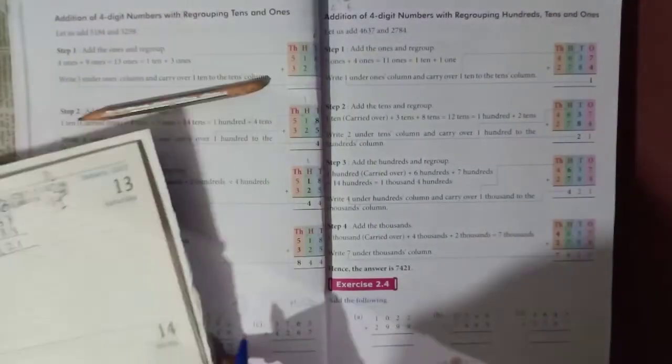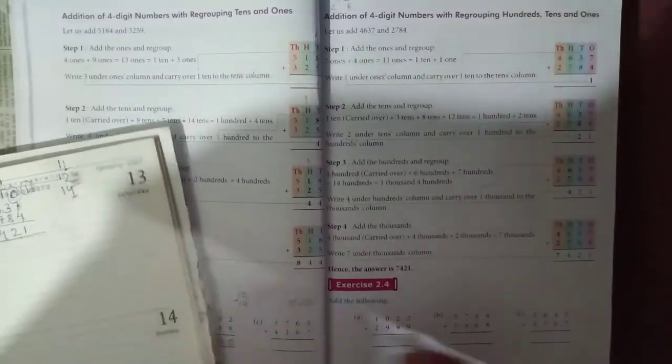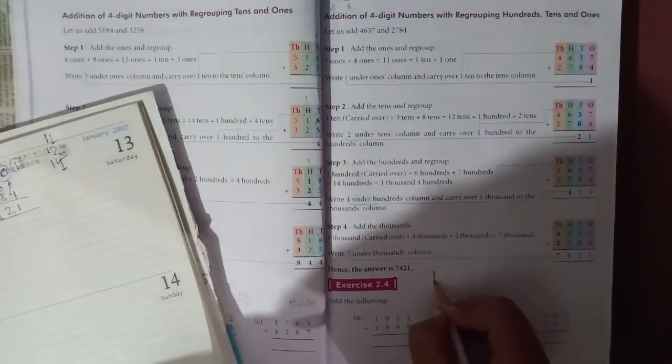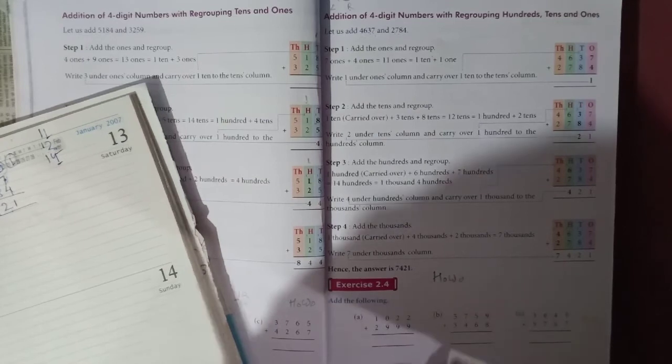So like this, you will regroup these numbers in one, ten, hundred, thousand position number, then add it. Understood? So this is your homework for today. Do it, understood? Best of luck students, this is your homework for today.